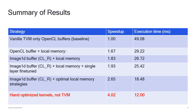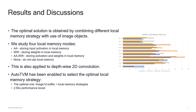Our hand-optimized kernels can achieve a speedup of about 4 compared to the vanilla TVM. So there is still a gap between our hand-optimized kernels and the auto-generated kernels. Now we'll give more details about our optimal solution. The optimal solution is obtained by combining different local memory strategies with the use of image objects.